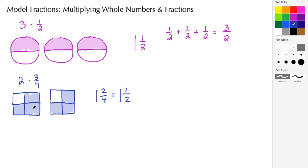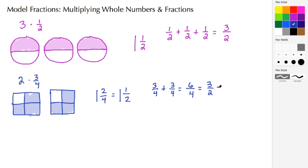This also turns out to be one and a half. If we were to convert each one of these pictures into their fractional equivalent, the first is three-fourths and the second is also three-fourths. When we add fractions, the denominators stay the same and we add the numerators: three plus three gives us six. Six-fourths simplifies to three-halves, and three-halves converts to one and one-half as a mixed number.